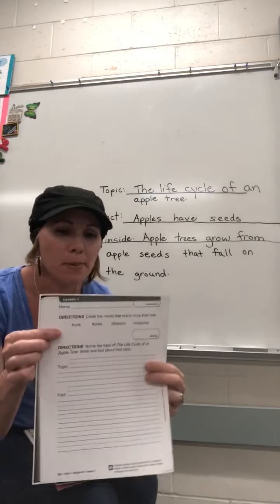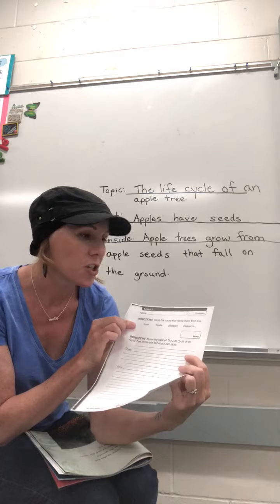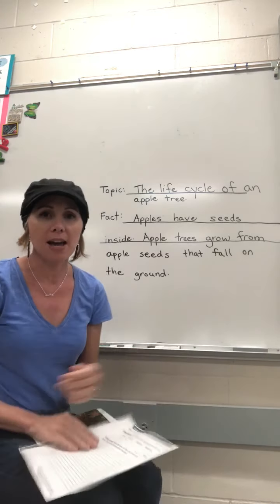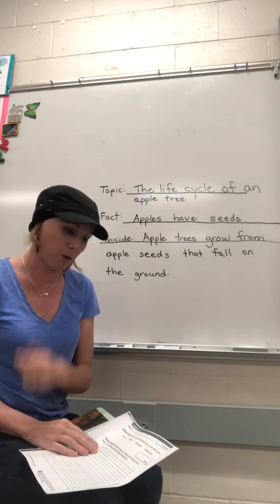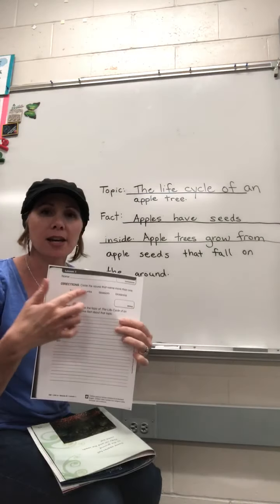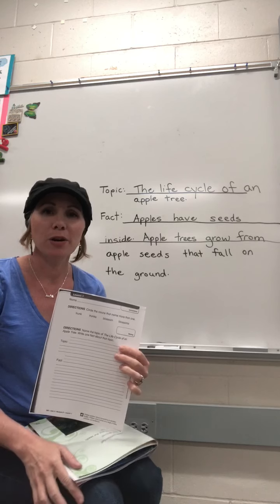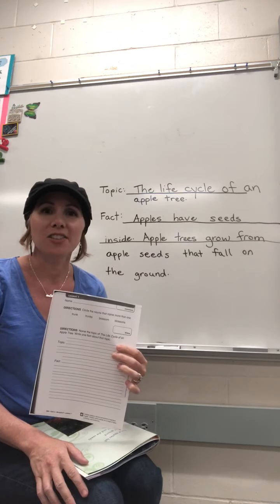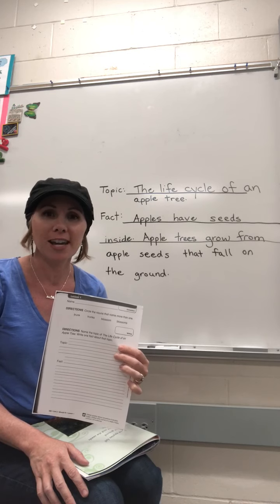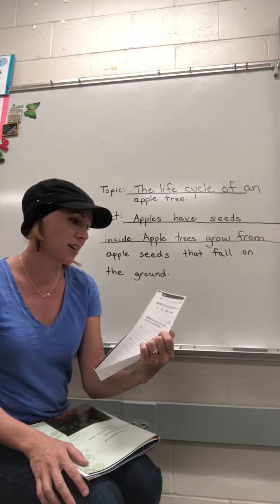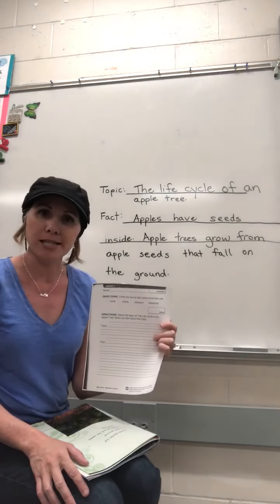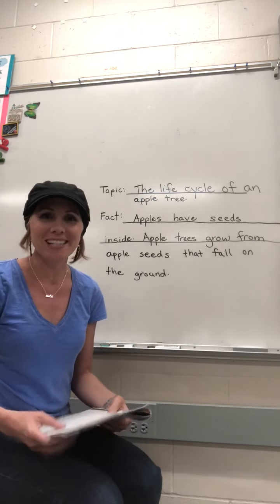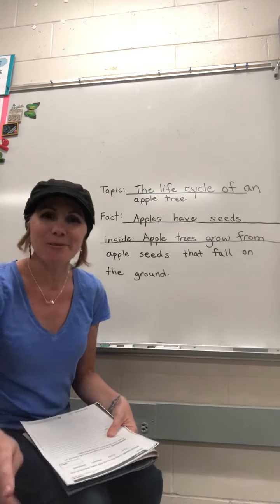Also at the top of this page it says circle the nouns that mean show more than one. Remember a noun is a person, place, thing, or animal. So first of all they have trunk and trunks — when we're writing about more than one we add an S to the end, so that's a big clue. The plural nouns are going to have an S on the end. Blossom or blossoms — which tells about more than one? I bet you guys are going to do that easy peasy. All right, have a great day! Bye.